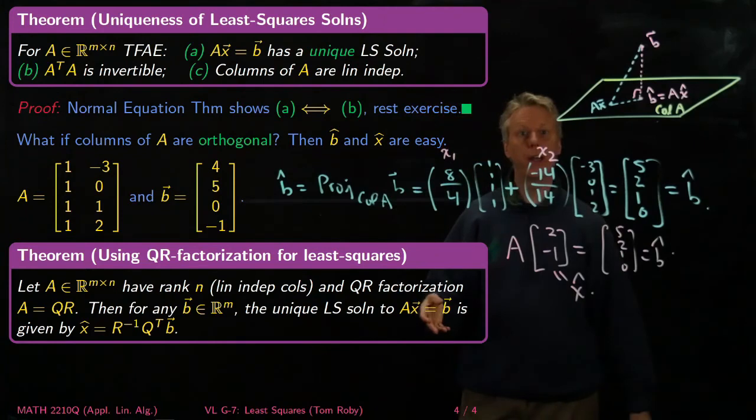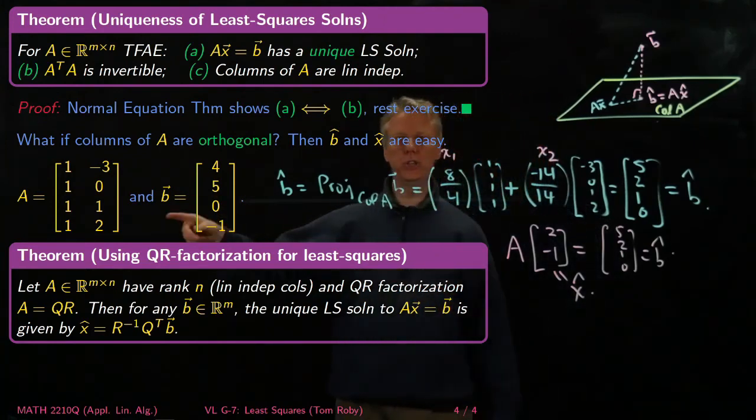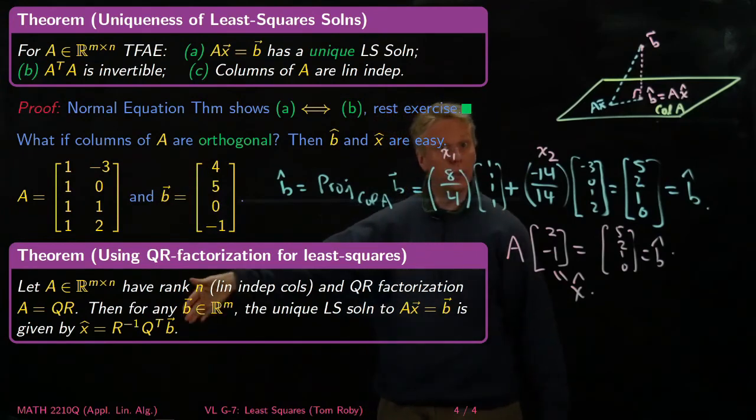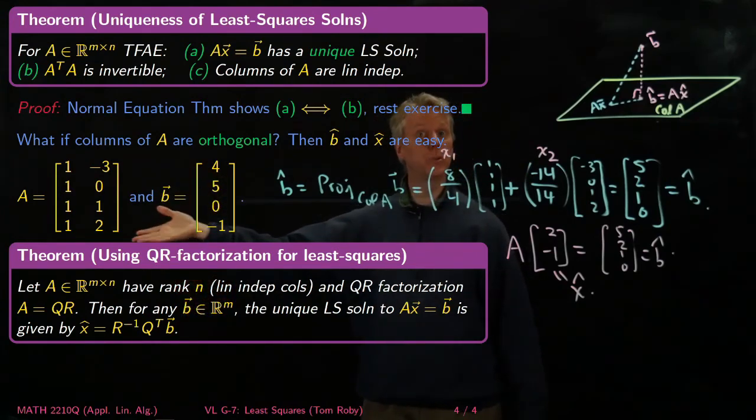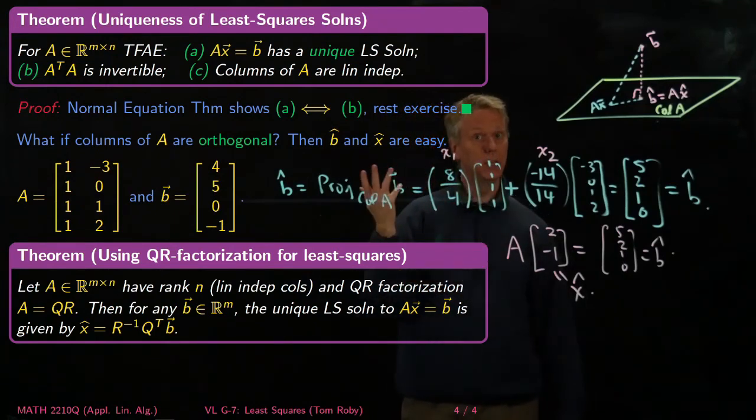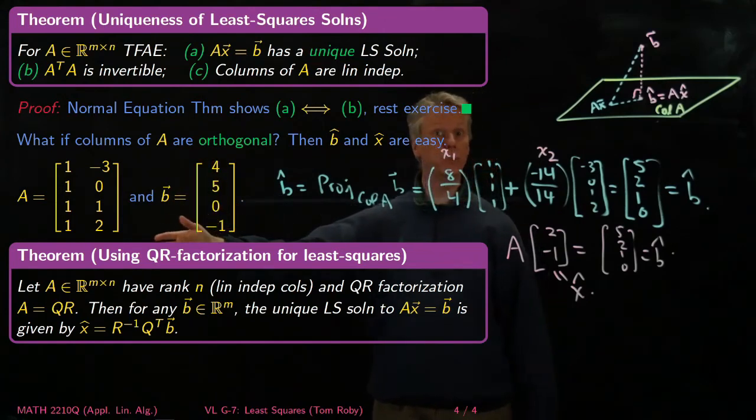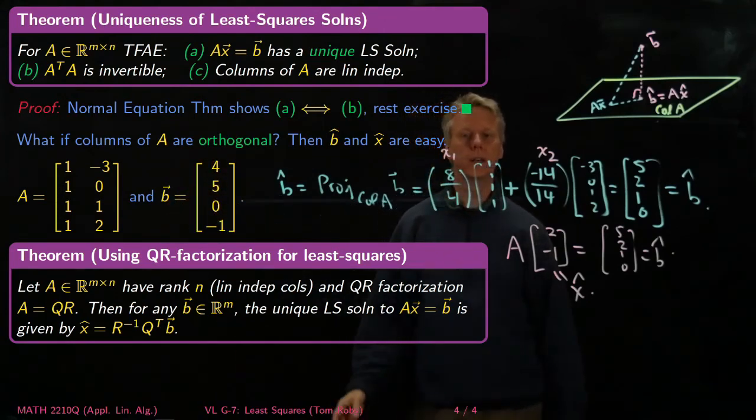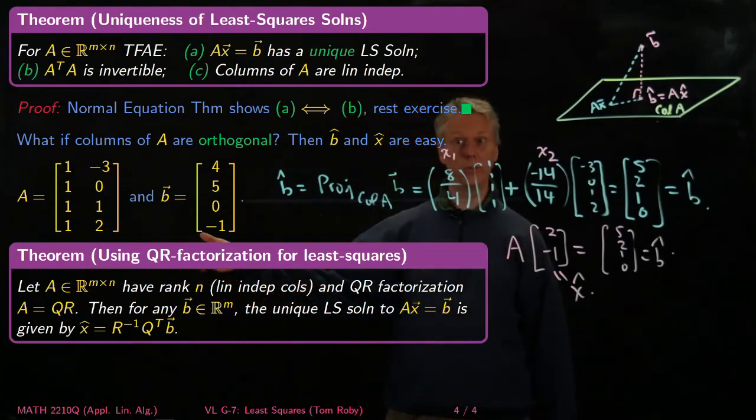And now, remember that a QR factorization of a matrix A factors it as Q, where Q has orthonormal columns, and the column space of Q is the same as the column space of A. So it's just the Gram-Schmidt result, right? Where you take the columns of A, you assume they're linearly independent, and you Gram-Schmidt them, and you get an orthonormal basis. And then R is the other thing that you have to have to make up the product of A equals QR.